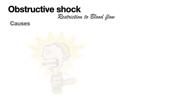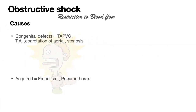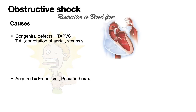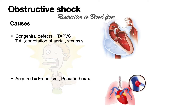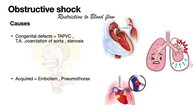The last type is obstructive shock, which is due to restriction in blood flow. Causes include congenital conditions such as TAPVC, tricuspid atresia, coarctation of the aorta, and stenosis, or acquired causes like pulmonary embolism or pneumothorax.